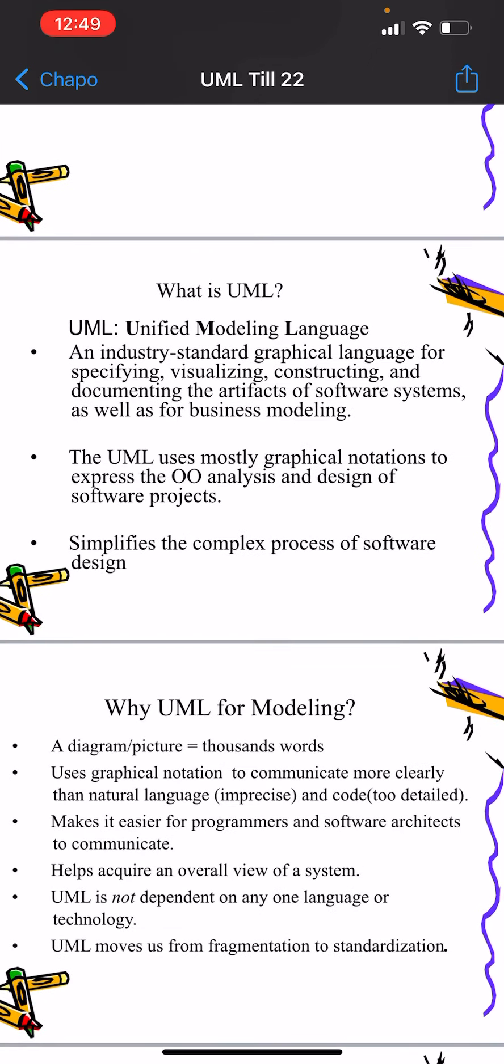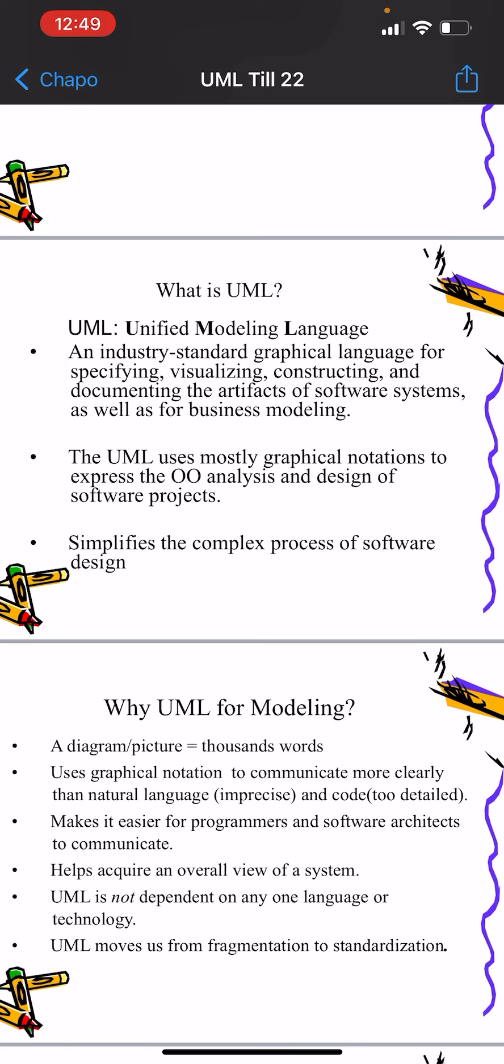First, we will discuss the definition of UML. UML stands for Unified Modeling Language. Remember one thing: UML is a language independent tool. It is an industry standard graphical language for specifying, visualizing, and documenting the artifacts of software systems, as well as for business modeling.